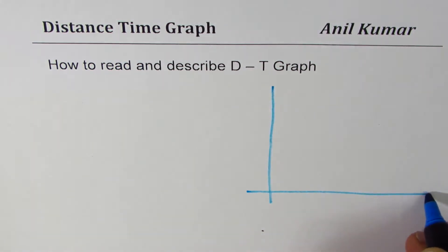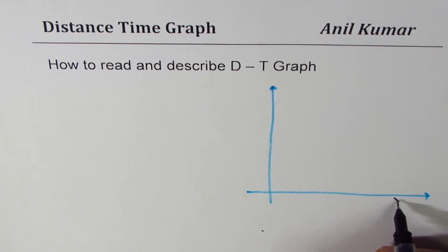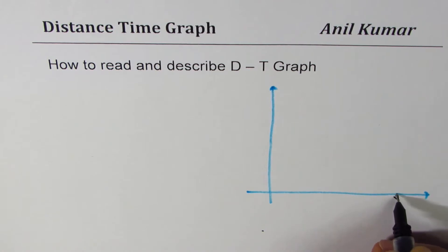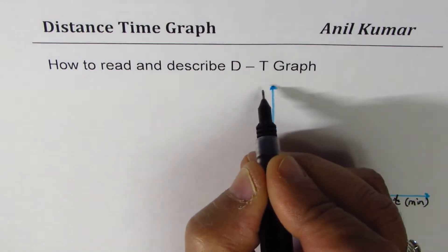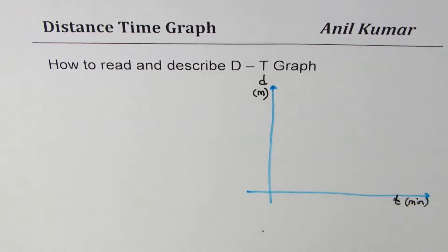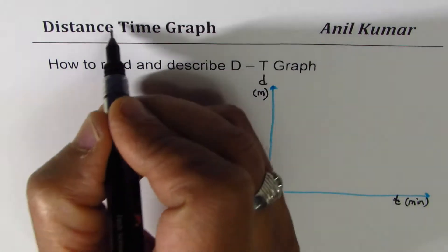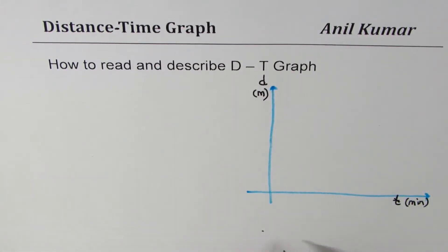Along the x-axis we have time — let me write time T, and let the units be minutes. Along the y-axis I'll take distance in meters. Let's consider the distance-time graph of a person who is walking away from home.